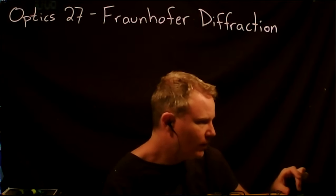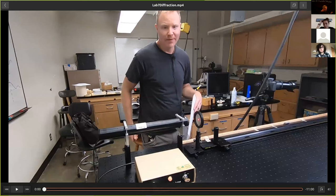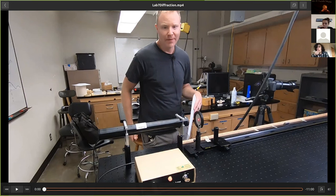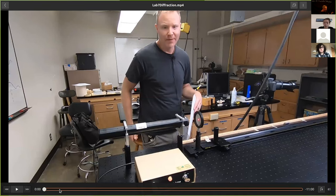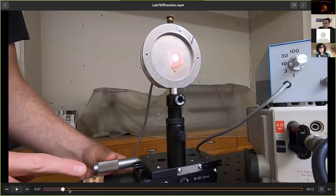The setup — at least the first setup we consider in the lab — is just a helium-neon laser pointed at a very small circular aperture. Ideally the laser would be a uniform plane wave hitting this aperture. In reality the laser is a little bit on the small side to make a perfectly flat plane wave, but the approximation that it is a plane wave works out pretty well — at least qualitatively. Quantitatively the fits aren't perfect, but in the inner region it's pretty perfect.